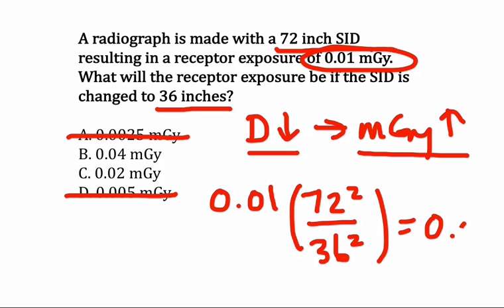and that's going to equal 0.04. If we inverted these distances, the exposure would move in the wrong direction. So remember, the exposure needs to increase. We put our fraction in the right direction, and we know the answer is 0.04.